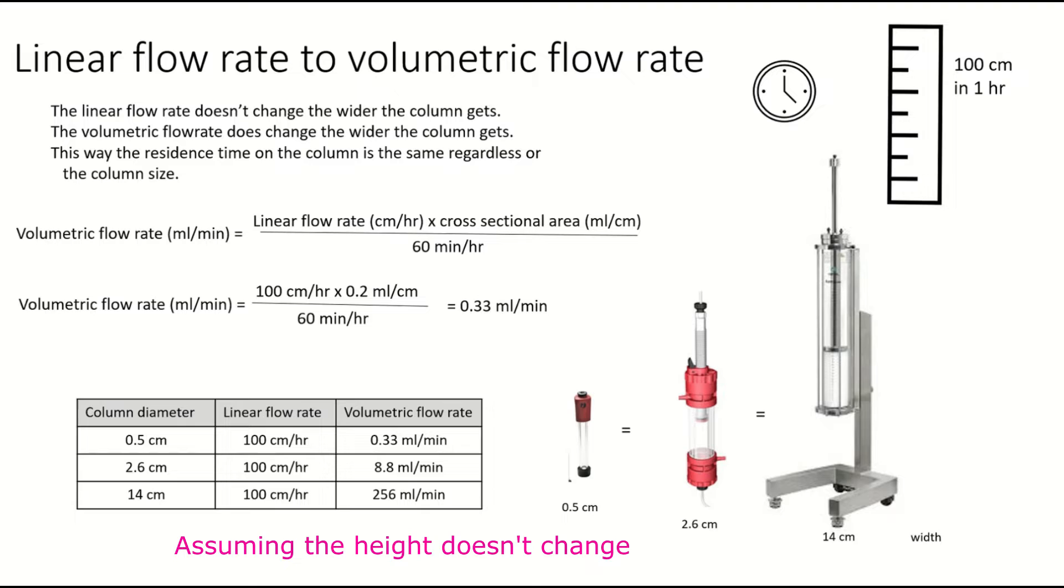So for columns of other sizes, like for example one that's 2.6 centimeters wide, 100 centimeters an hour is 8.8 mils per minute. 14 centimeters, it's 256 mils per minute.